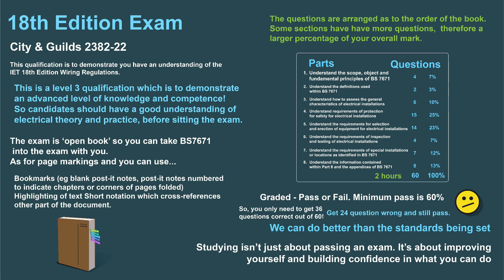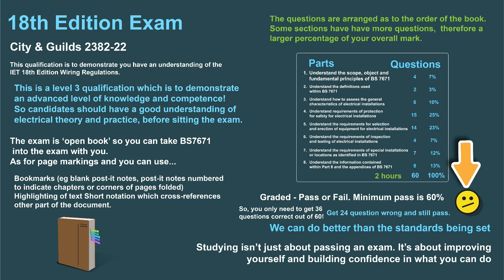The questions are arranged in the order of the book. Some sections have more questions, and therefore a larger percentage of the mark. It's greater than a pass or fail, and the minimum pass rate is around 60%, which means you can get 24 questions wrong and still pass. But we don't want to get any questions wrong — we can do better than that. We want to get them all.